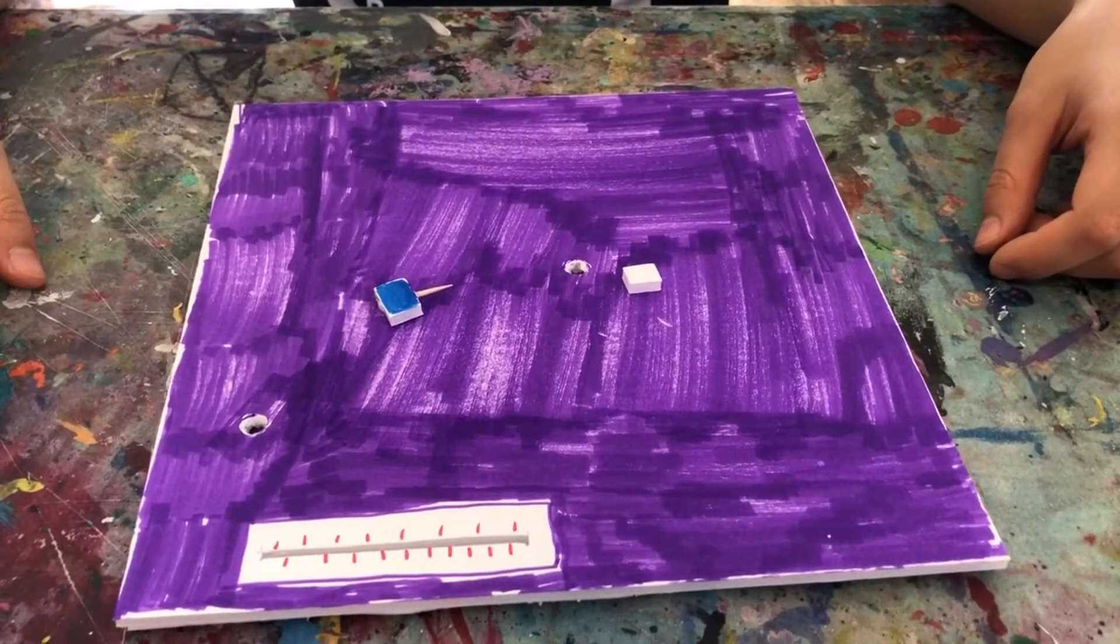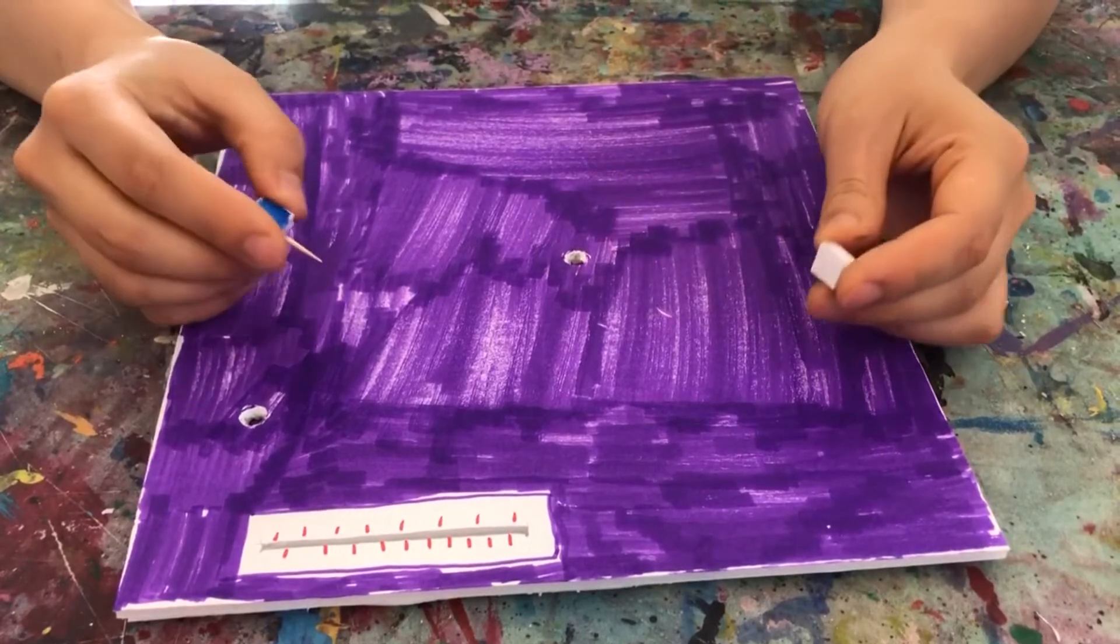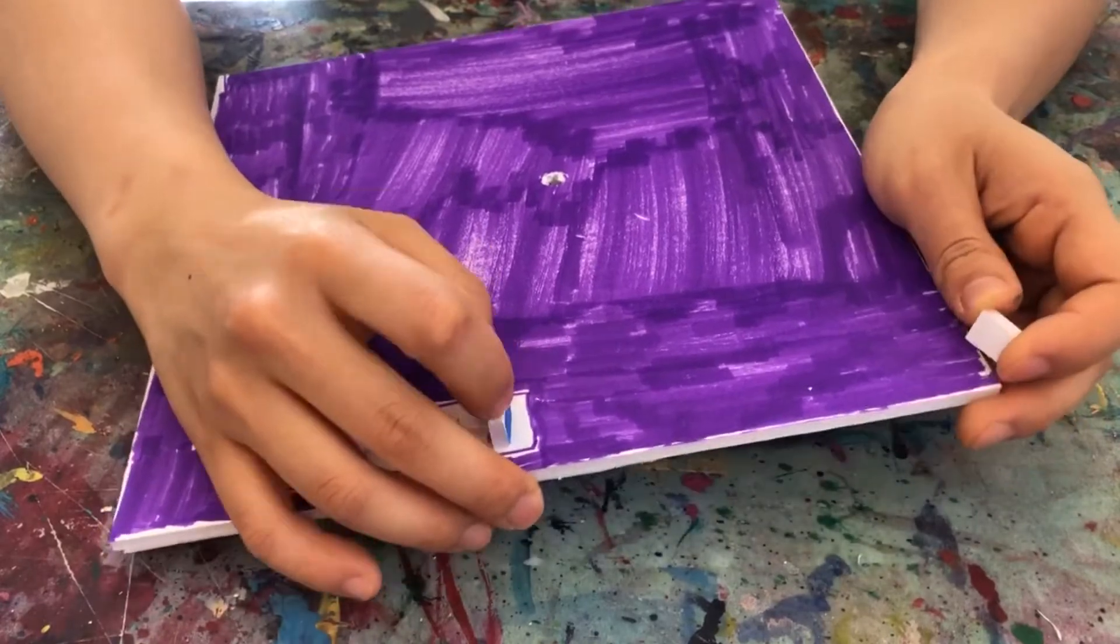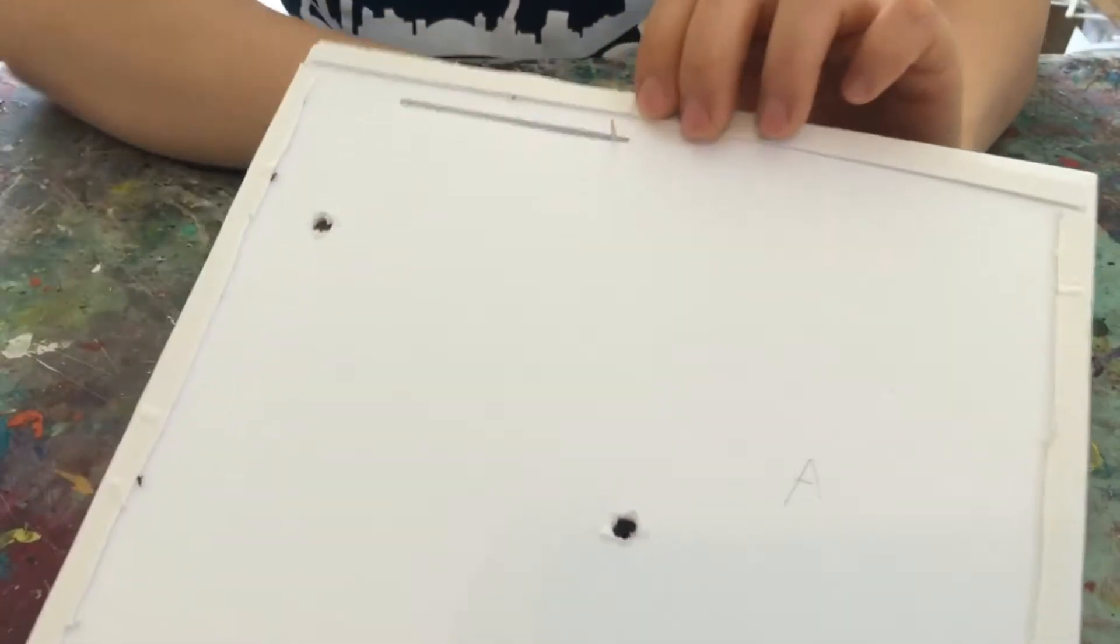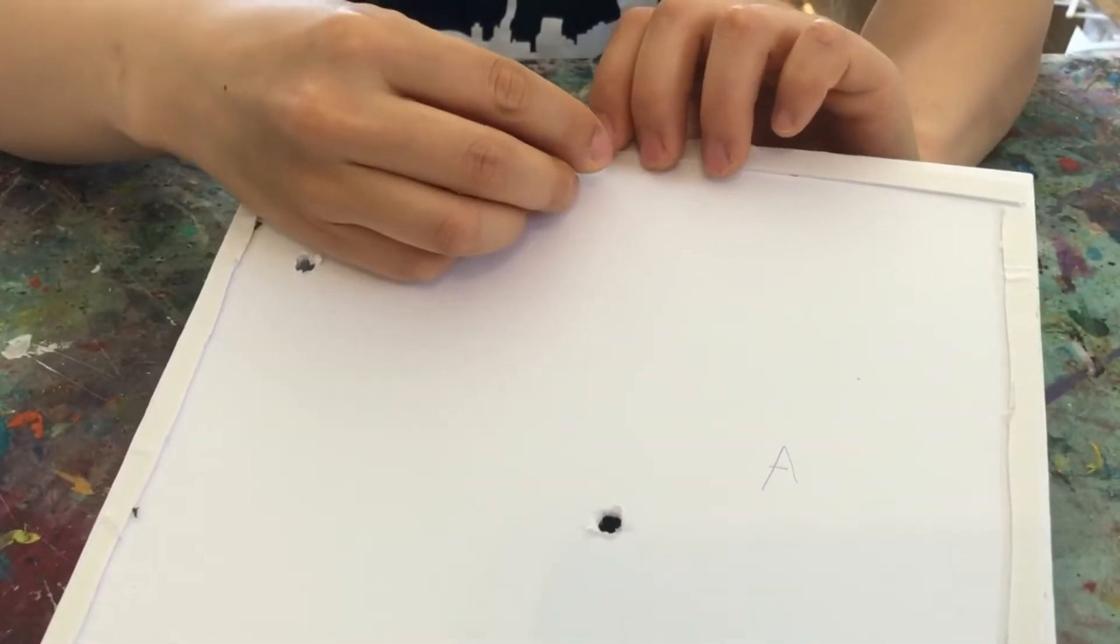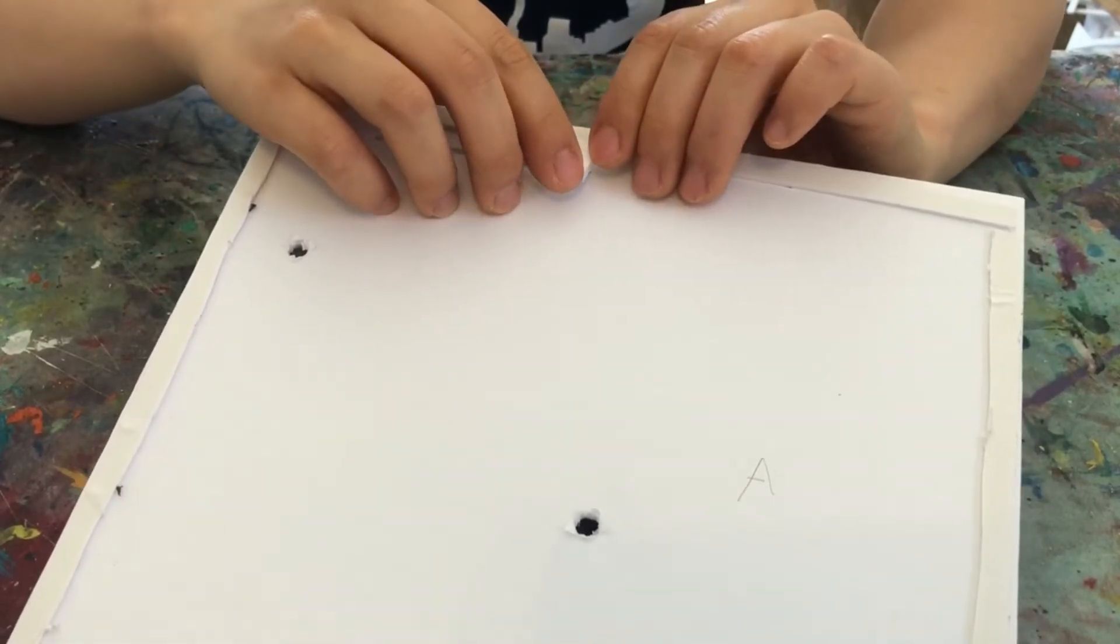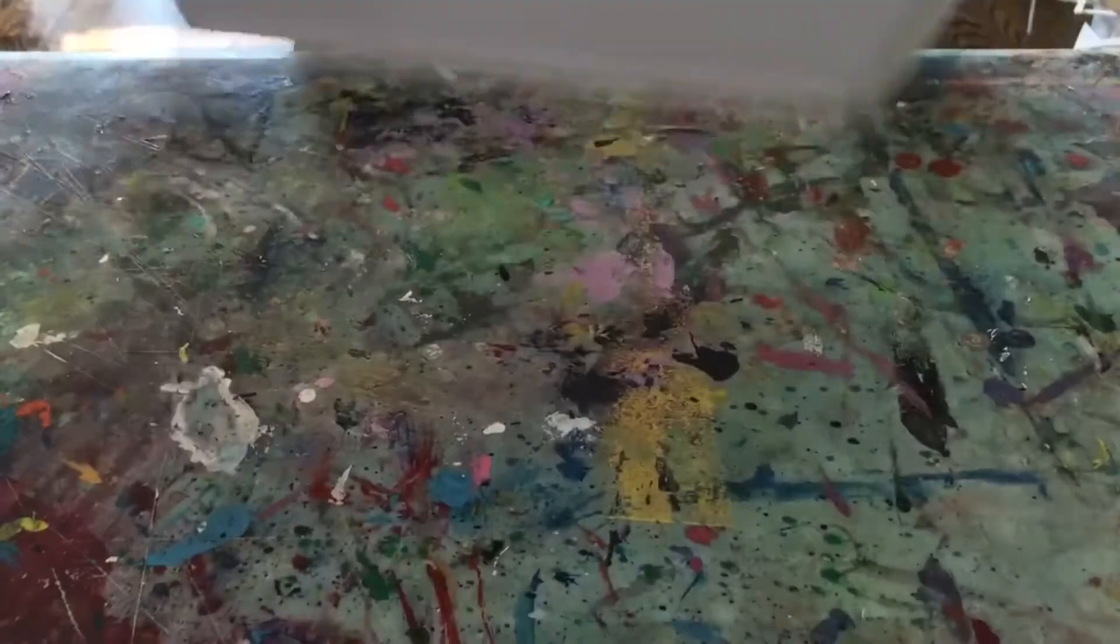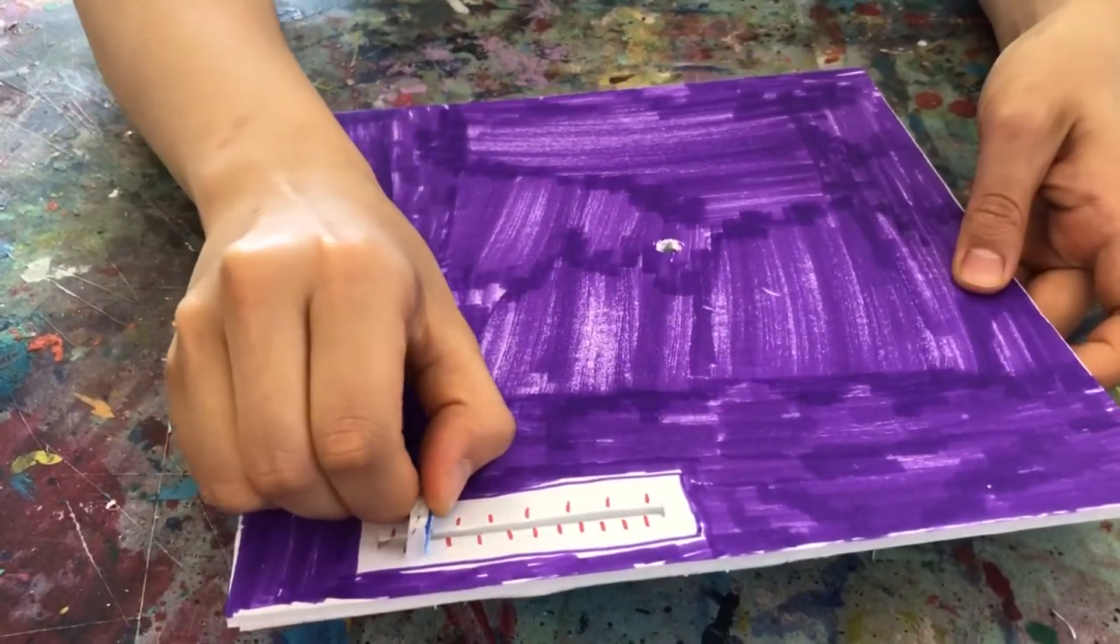Now grab your volume control piece. You're gonna insert it into the slit on top of the A, push it through the slit, and then holding it, you're gonna flip it backwards and insert your G piece on the other side of the toothpick to secure your volume control button. Now your volume control should be able to slide left and right.